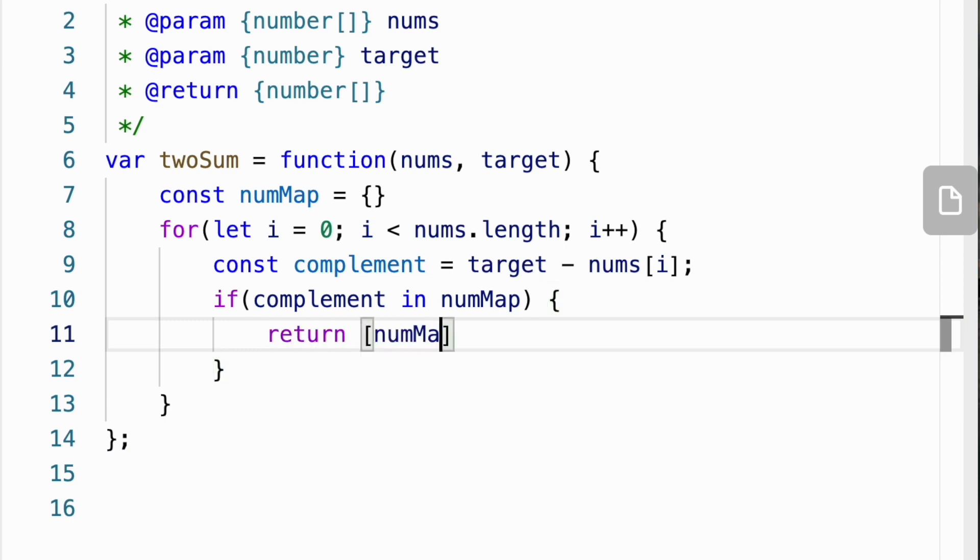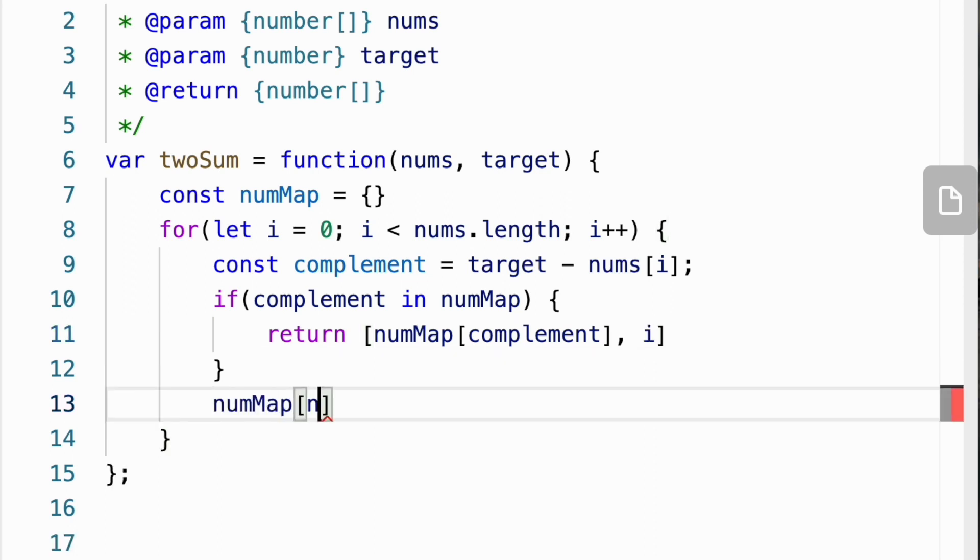If it does, we found our pair and we return the indices. Otherwise we keep adding our numbers to the hashmap. And if no solution is found, we simply return an empty array.